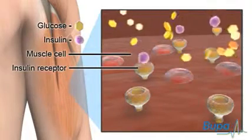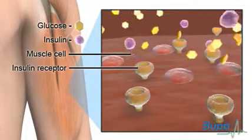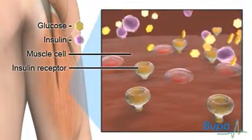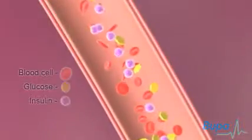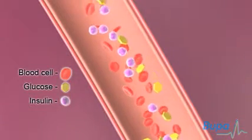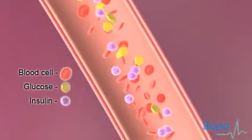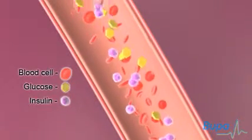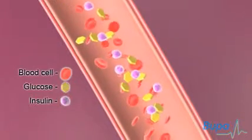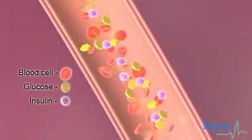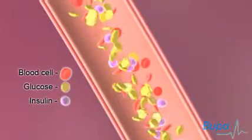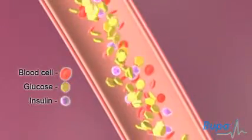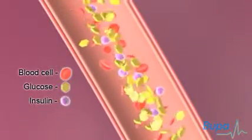Type 2 diabetes develops when your body becomes resistant to insulin, so glucose isn't available to the parts of the body that need it. When the body's tissues, for example your muscles, don't respond to insulin, they can't make use of the glucose in the blood for energy. As a result, glucose stays in your bloodstream and your blood glucose levels are raised.